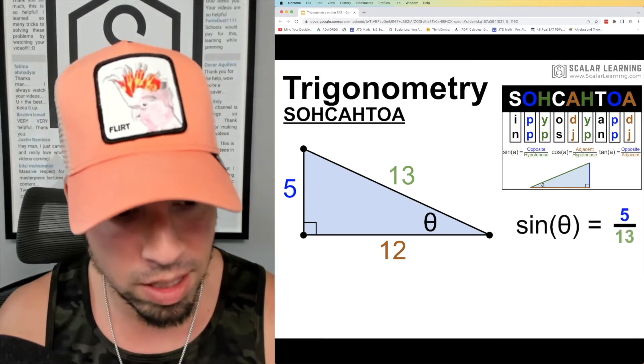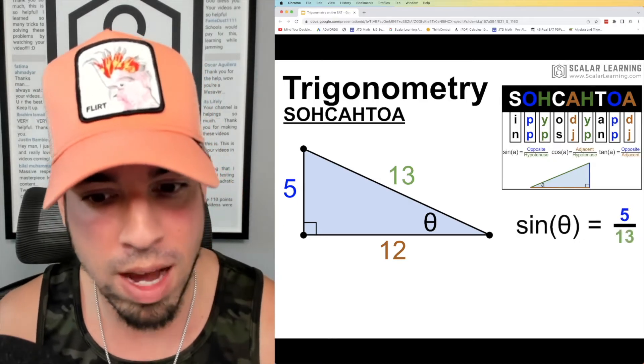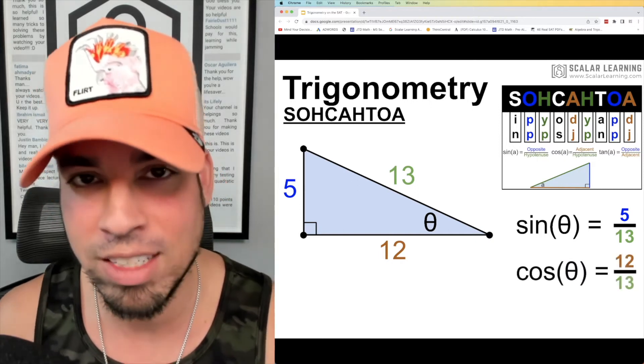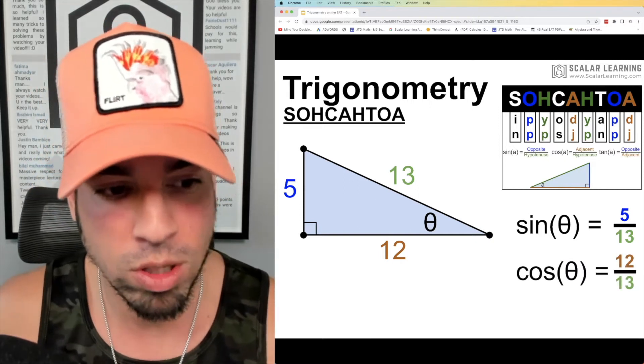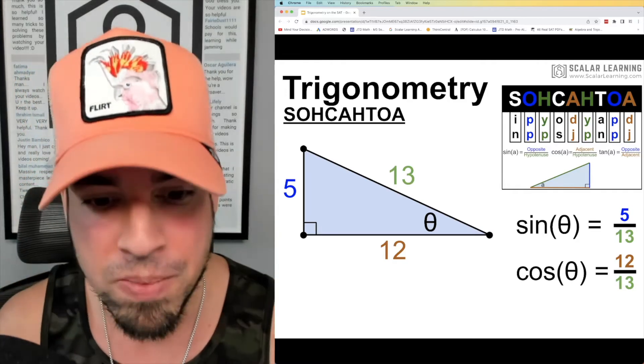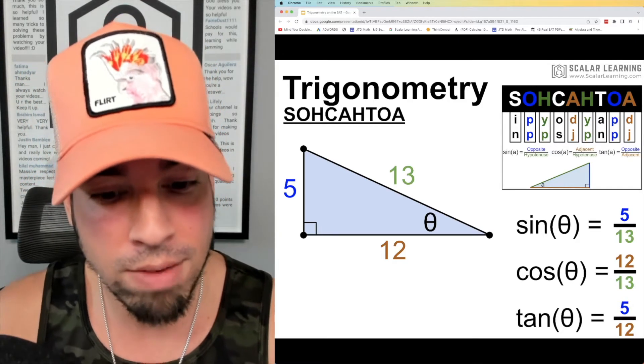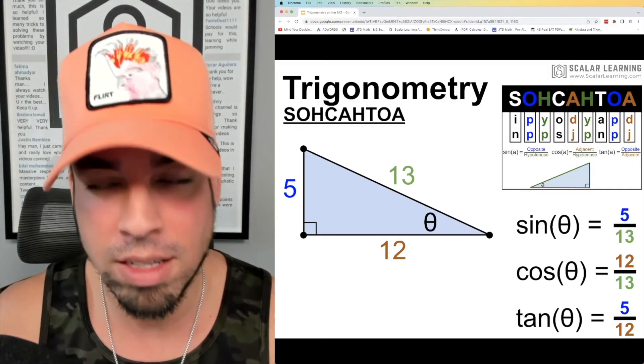If we were to, for example, take sine of theta, it would be opposite that theta, which is 5, over the hypotenuse which is 13. If we were to take cosine of theta, it's adjacent—meaning the side next to it—12 over the hypotenuse 13. Last but not least, tangent of theta would be that opposite side 5 over the adjacent side 12.